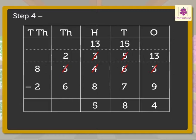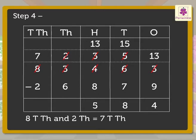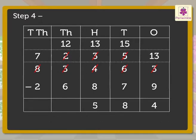Step 4: Subtract the digits in the thousands column. Here, as the thousands are not enough, we regroup the ten thousands. That is, 8 tens of thousands and 2 thousands is equal to 7 tens of thousands and 12 thousands. Therefore, 12 minus 6 is equal to 6 thousands.